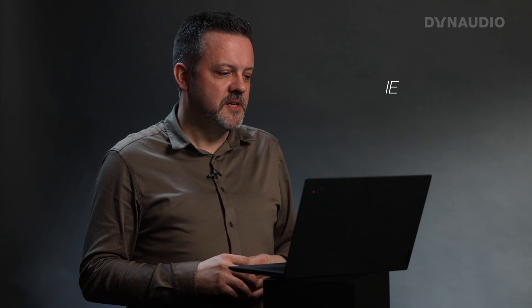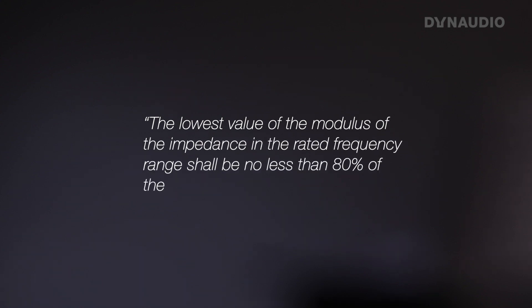To get really nerdy about this, I'm going to quote the actual standards. There's a standard called IEC 62068-5, which says the lowest value of the modulus of the impedance in the rated frequency range shall be no less than 80% of the rated impedance. In everyday words, the impedance can never dip lower than 20% below the rated impedance. So if we rate the loudspeaker at 8 ohms, the impedance can never be less than 6.4 ohms. If we rate it at 6 ohms, the minimum impedance can be 4.8 ohms. That's really how we determine the nominal or rated impedance of the loudspeaker.